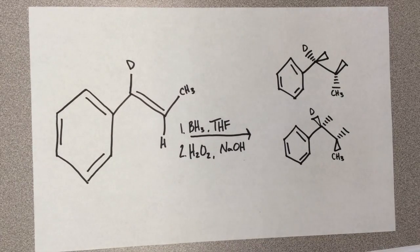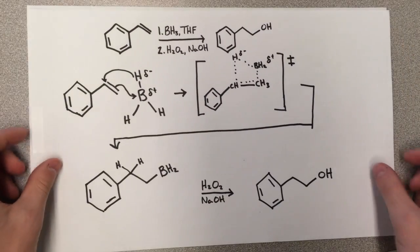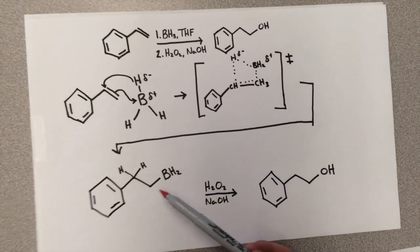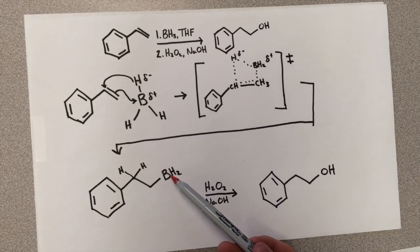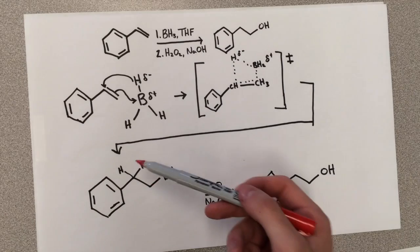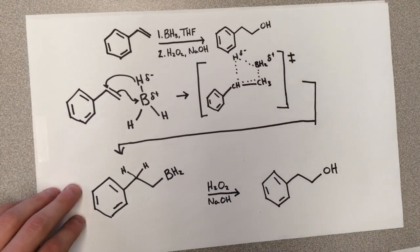So, one of the most important things to remember in this reaction is the stereochemistry. We're going to go back and look at the reaction itself real quick. So, as we can see, the boron, or the BH2, is on the least substituted carbon, and the hydrogen has gone to the most substituted carbon.